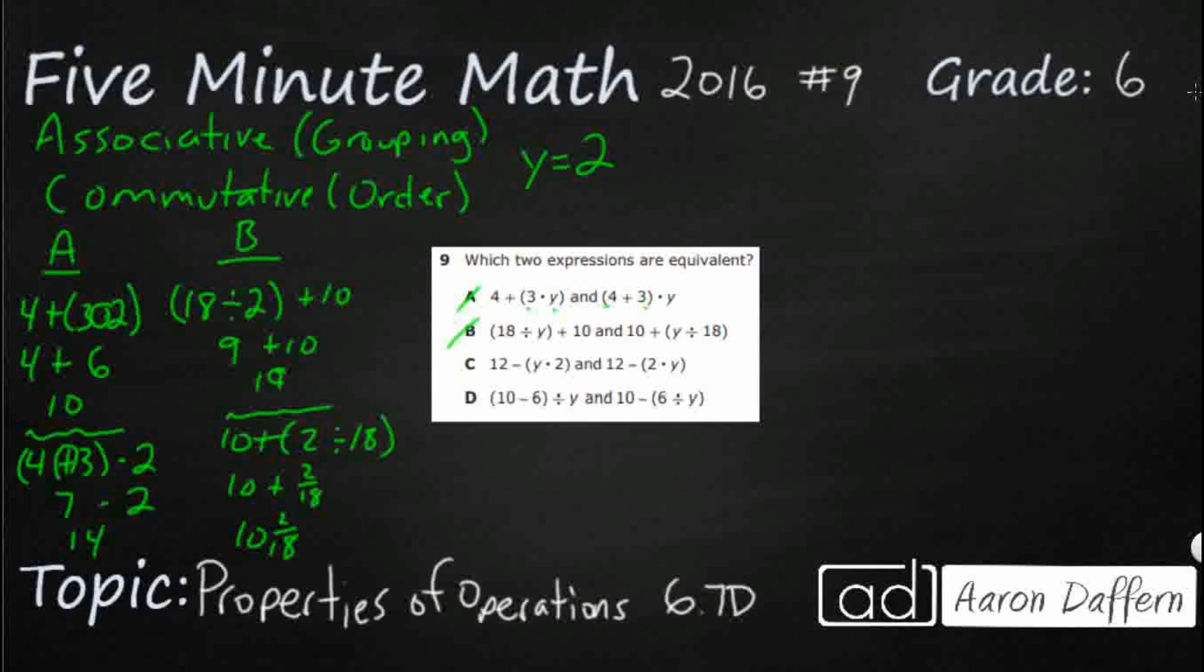So let's hope it's C or D here. So C, 12 minus, let's make this 2, times another 2. All right, so 12 minus 2 times 2 is 4. 12 minus 4 is 8.